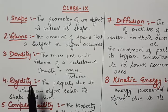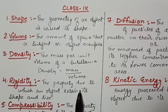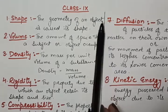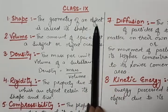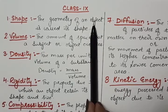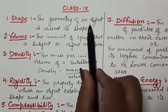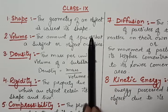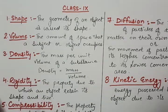Rigidity: the property due to which an object retains its shape and size is called rigidity. On pressing it, if it is not changing its shape or size, that means it is rigid — it does not change its shape, and this property is called rigidity.